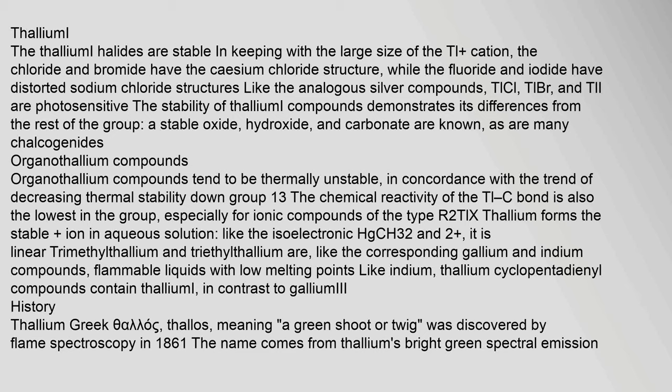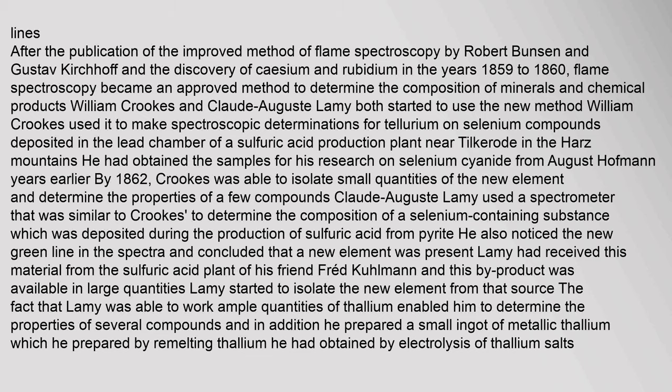Thallium (from Greek 'thallos,' meaning a green shoot or twig) was discovered by flame spectroscopy in 1861. The name comes from thallium's bright green spectral emission lines. After the publication of the improved method of flame spectroscopy by Robert Bunsen and Gustav Kirchhoff and the discovery of cesium and rubidium in 1859–1860, flame spectroscopy became an approved method to determine the composition of minerals. William Crookes used it to make spectroscopic determinations for tellurium and selenium compounds deposited in the lead chamber of a sulfuric acid production plant near Tilkerode in the Harz Mountains.